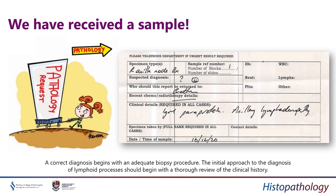That lack of a suspected diagnosis can itself be a clue about what the clinician already knows or doesn't know. The clinical details in this case are IgM paraprotein and axillary lymphadenopathy. IgM is associated with Waldenström's macroglobulinemia or lymphoplasmacytic lymphoma. So from this information alone I'm suspecting a low-grade lymphoma, even though no suspected diagnosis was provided.